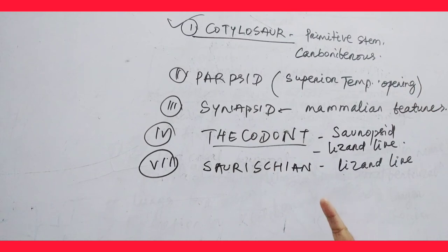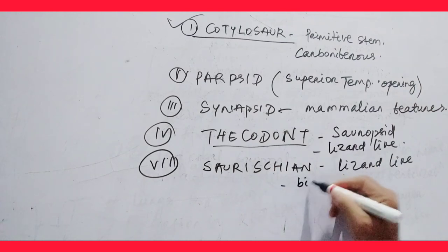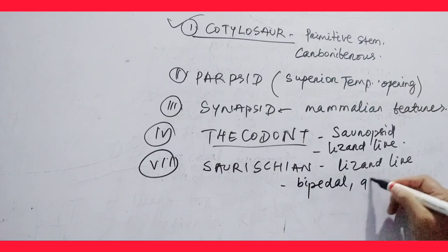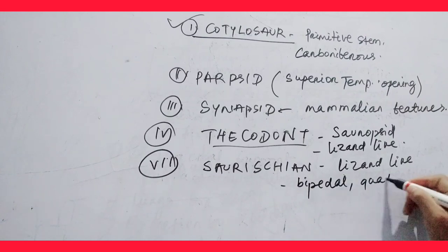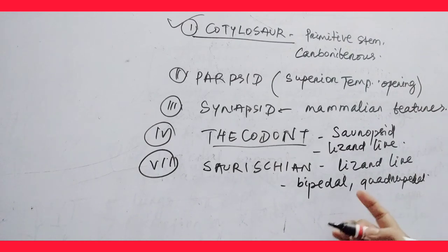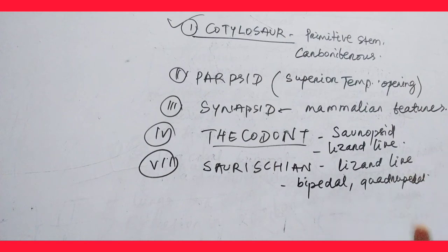Saurischians are bipedal or quadrupedal — maybe bipedal or quadrupedal. These consist of herbivorous and carnivorous animals.